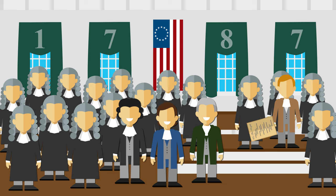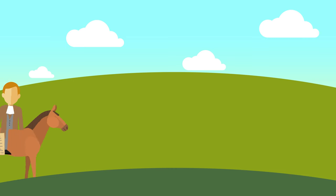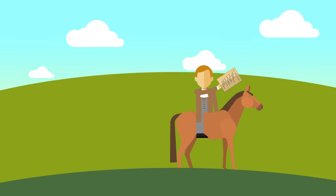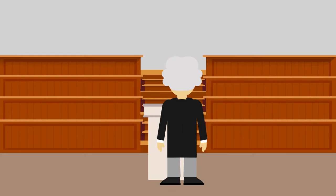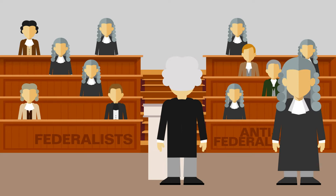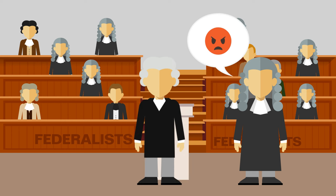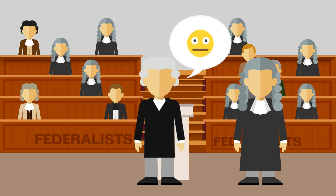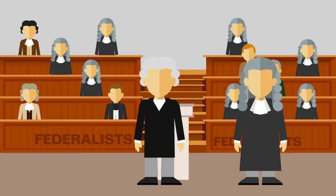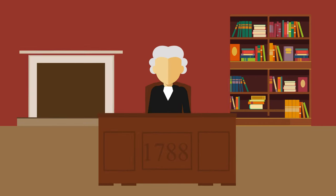This concern did not stop the Constitution from being sent out for ratification. However, during this time, a quarrel known as the ratification debates began between Federalists and Anti-Federalists. It was argued the Constitution lacked specific limits on government power. In order for some states to ratify, the condition was made that a Bill of Rights had to be added.